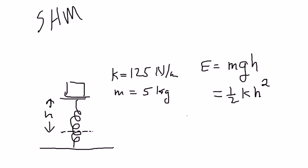We're going to set these two equal: mgh equals one half k h squared. One of the h's is going to cancel out, you get 2mg over k is equal to h.